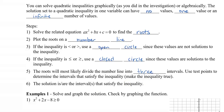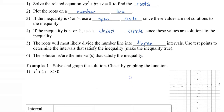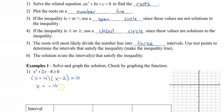All right, so these are a lot of steps, so let me go through them again. The first step is to find the roots. So let's solve this question here — we're going to pretend that this is an equal sign, so I want to factor. And so we get x plus 4 and x minus 2, and this equals 0. So x is equal to negative 4 and 2.